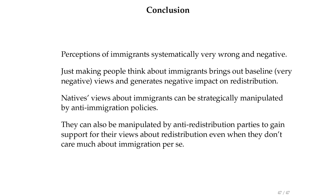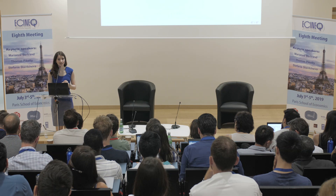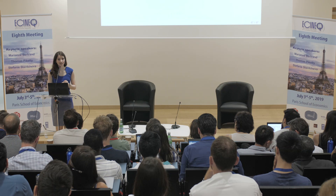To sum up: views about immigrants are systematically quite wrong and negative. The systematic nature of these misperceptions is striking. Just making people think about immigrants — perhaps because of these negative misperceptions that are brought out — generates a negative impact on redistribution. So natives' views can be manipulated strategically by anti-immigration parties, but also by anti-redistribution parties. Just alluding to immigration can generate a backlash against redistribution — even if you don't care about immigration per se, it could have this unintended effect on redistribution. I'm very curious to hear your questions. Thank you for your attention.